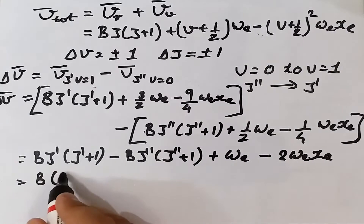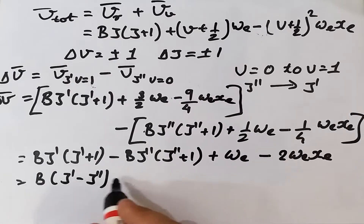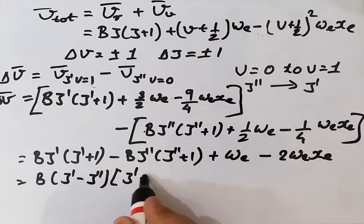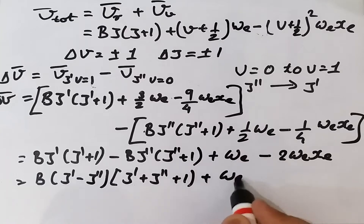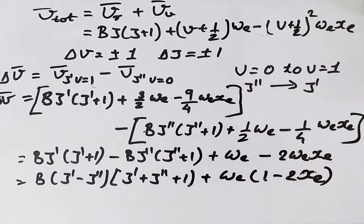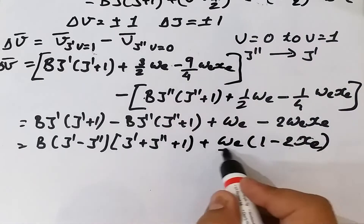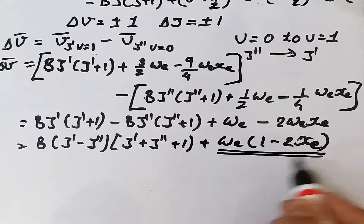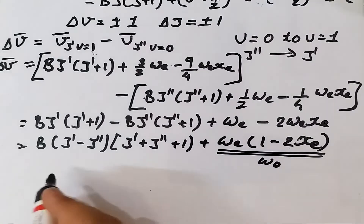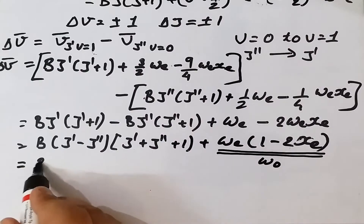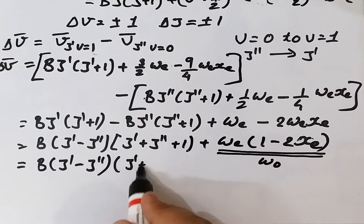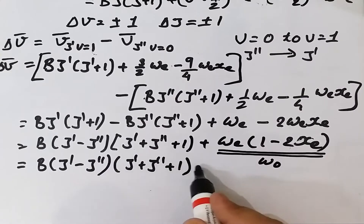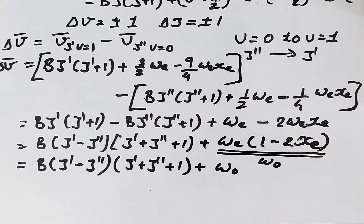Further simplifying, Δμ̄ = B(J' − J'')(J' + J'' + 1) + ωe(1 − 2xe). We can substitute ω₀ = ωe(1 − 2xe), giving the final relation: Δμ̄ = B(J' − J'')(J' + J'' + 1) + ω₀.